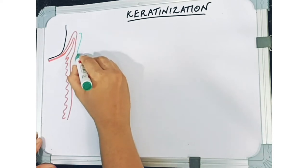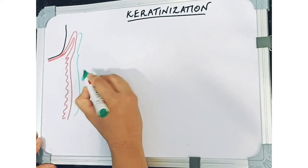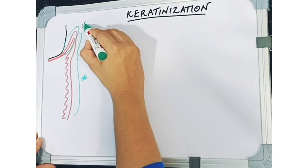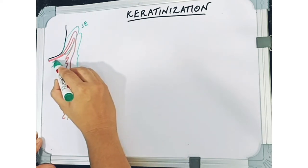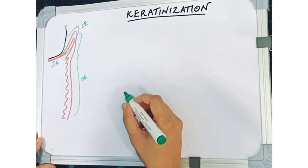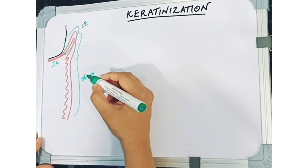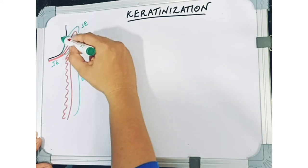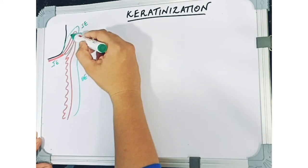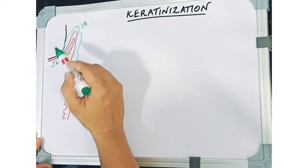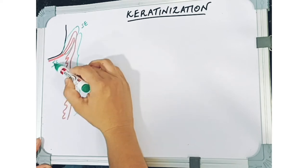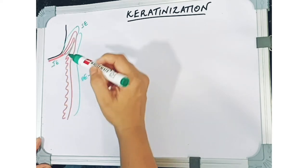If you see this diagram, we have the outer epithelium, then this portion is the sulcular epithelium, and here we have the junctional epithelium. The outer epithelium faces the oral cavity, sulcular epithelium faces the tooth but is not in contact with the tooth surface, while the junctional epithelium provides contact between the gingiva and the tooth.